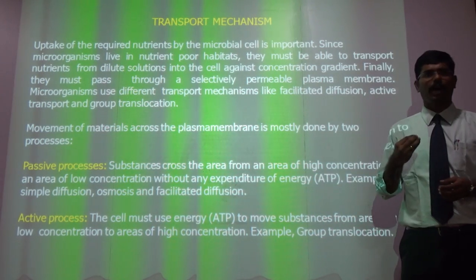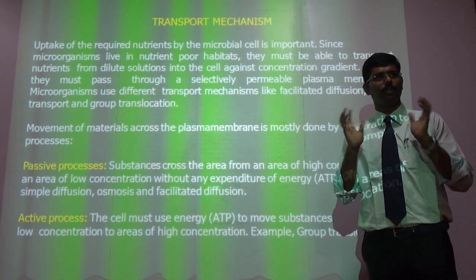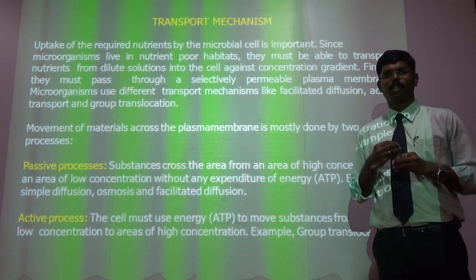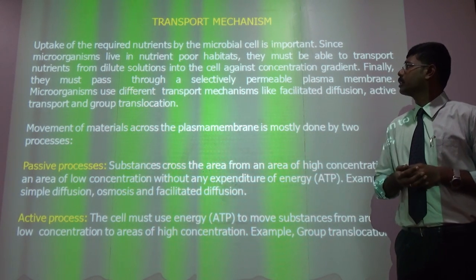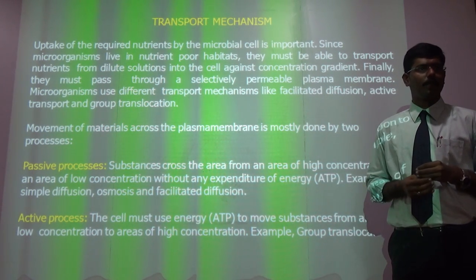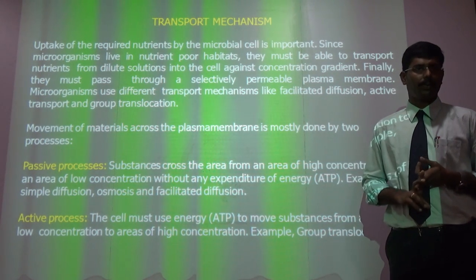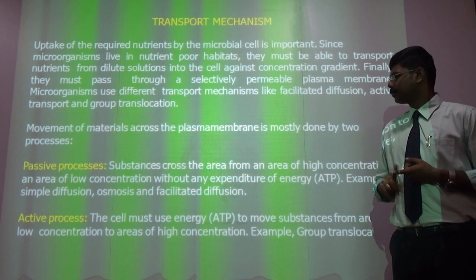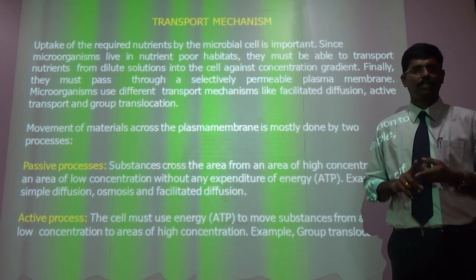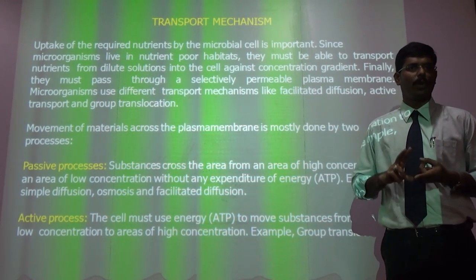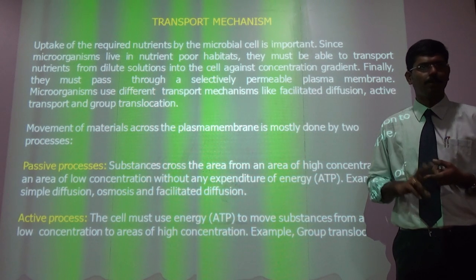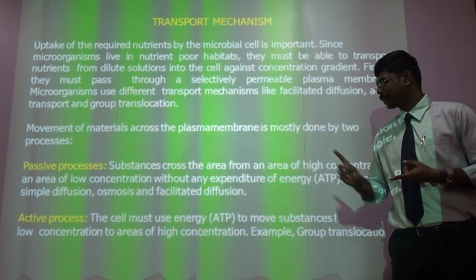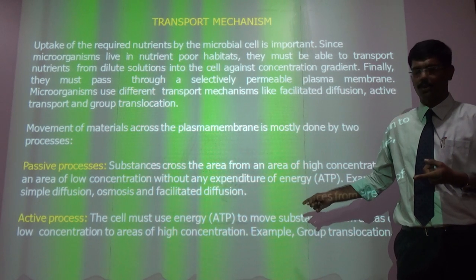Unlike humans, microbes do not have a specific digestive system to engulf food particles because they are fully covered by a cell wall. Instead, microorganisms use a specific transport mechanism for their energy and nutrient intake. This transport mechanism is divided into two processes: passive and active. In passive transport, a substance moves from higher to lower concentration with no energy required. In active transport, the organism actively needs ATP molecules or a binding agent to move compounds — and the key difference is that movement goes from lower concentration to higher concentration.